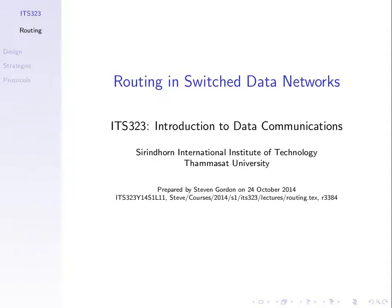We'll look at routing with respect to computer networks, or specifically switched data networks — sending data through a network using switching. Routing applies to all switching techniques: circuit switching and the two types of packet switching. In all cases, we need to find a path. The examples from now on will focus on packet switching networks, mainly datagram packet switching, because that's what the internet uses.